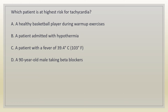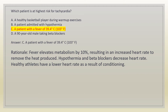Which patient is at highest risk for tachycardia? A. A healthy basketball player during warm-up exercises. B. A patient admitted with hypothermia. C. A patient with a fever of 39.4 degrees Celsius (103 degrees Fahrenheit). D. A 90-year-old male taking beta blockers. Answer: C. A patient with a fever of 39.4°C (103°F). Rationale: fever elevates metabolism by 10%, resulting in an increased heart rate to remove the heat produced. Hypothermia and beta blockers decrease heart rate. Healthy athletes have a lower heart rate as a result of conditioning.